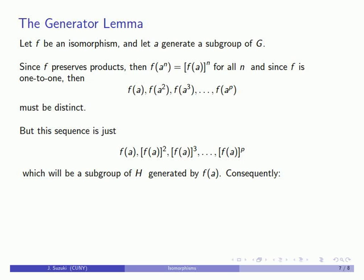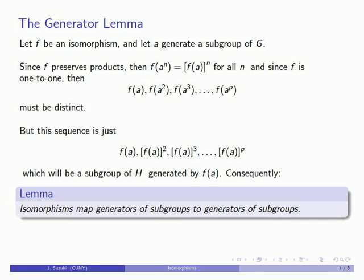This gives us another very useful result: an isomorphism will map the generator of a subgroup to the corresponding generator of a subgroup.